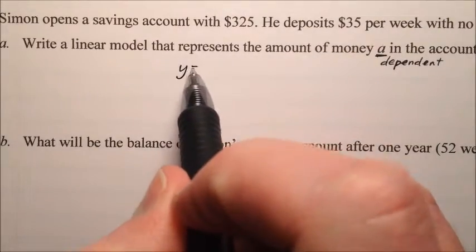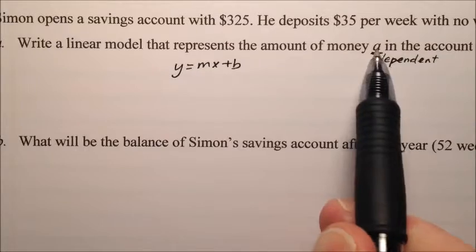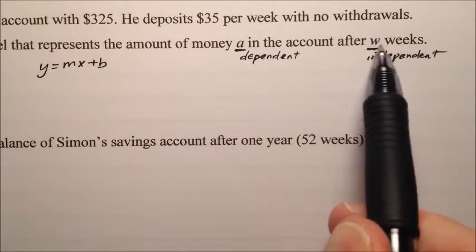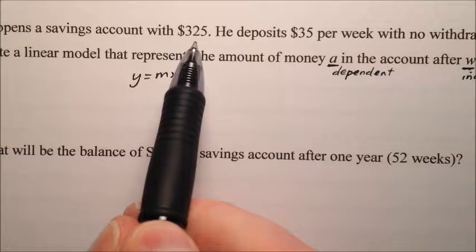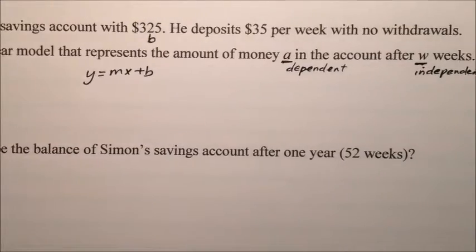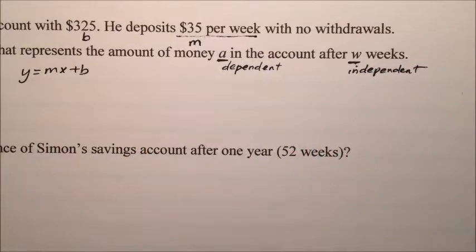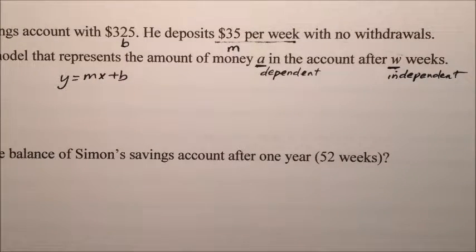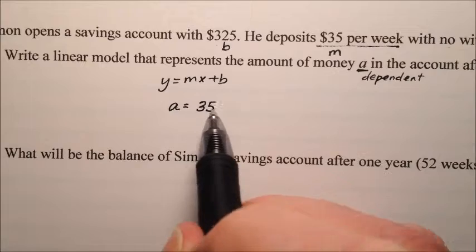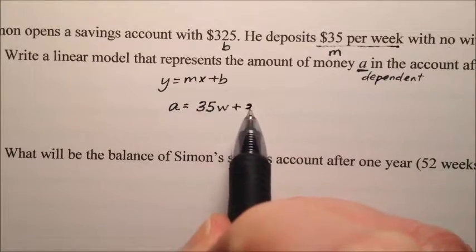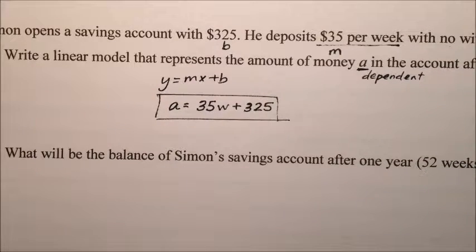So when we start with y equals mx plus b, first of all we know we can exchange the y, which is our dependent variable, for the letter a, and we know we can exchange x, which is the independent variable, with our w for weeks. The $325 is the starting place, so that's typically going to be our y-intercept. And if you deposit $35 per week, this is our rate of change, so this is our slope. So with all of this information, we can say that A, the account balance, equals the slope $35 per week times the number of weeks, plus our starting value of $325. So right there is my linear model that I can use.